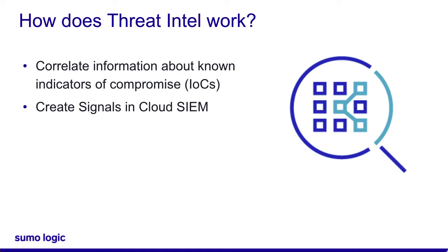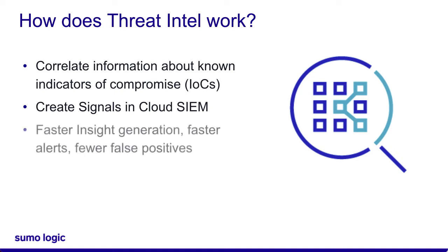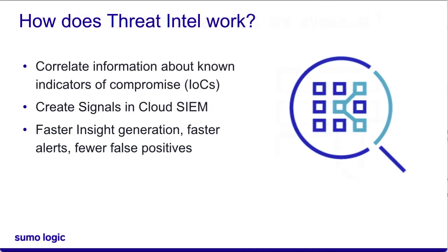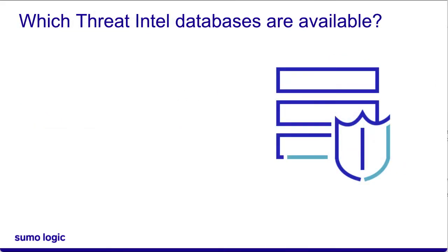For example, a signal will be created if a record contains a known malicious IP address, in addition to any other signals that record may trigger. This will cluster signals together sooner, creating insights and alerts faster. The additional confidence you get from a Threat Intel database also means these insights are less likely to be false positives. Cloud SIEM currently supports information from several Threat Intel databases, including ThreatQ and TAXII Feeds.